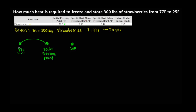You cannot go straight from normal temperature to the final frozen temperature. First, you go from normal temperature down to the freezing point. Then you need additional heat to freeze the element at that freezing point temperature. After that, you need yet another heat to continue cooling below the freezing point down to 25°F. So in total, you have three heats to account for.